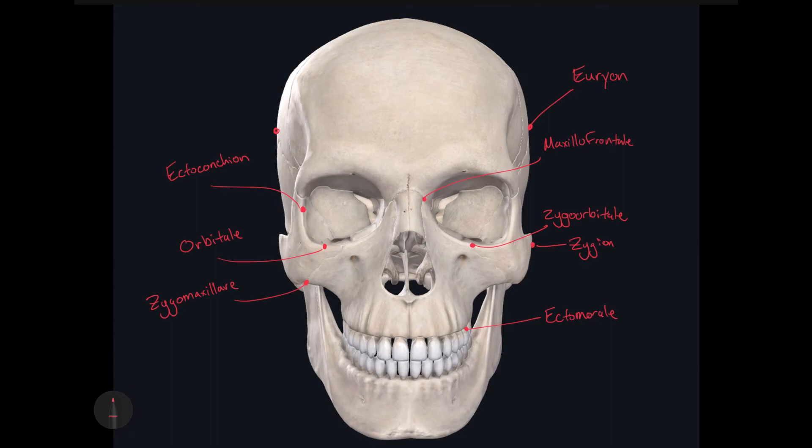The final craniometric point is the alare. If you know a little Latin, you know that ala means wing — referring to the wing of the nose. The alare is located where the most lateral points of the nasal aperture are, right here on each side. That's called the alare.